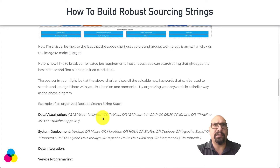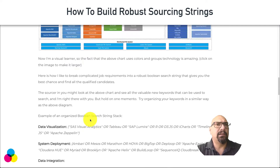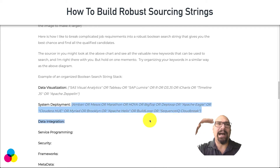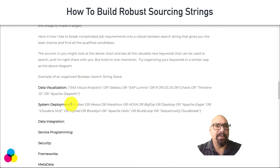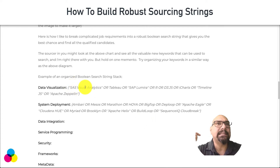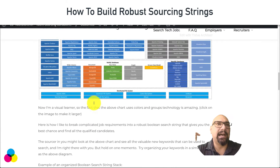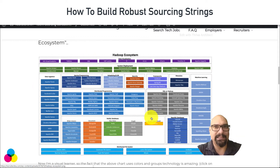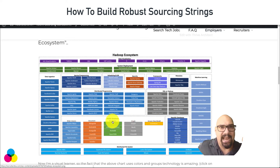Then you move on to the next category — system development — and I'll make these color-coded in my blog post. You're going layer by layer in a logical manner, giving yourself the biggest chance of finding someone who has one or more skills from each layer. What you start getting is a complete person with a complete stack, instead of just picking out the most popular keywords. Otherwise your manager says 'yeah but they don't have any of the backend database skills' — that's because you didn't build the string to capture the entire stack.